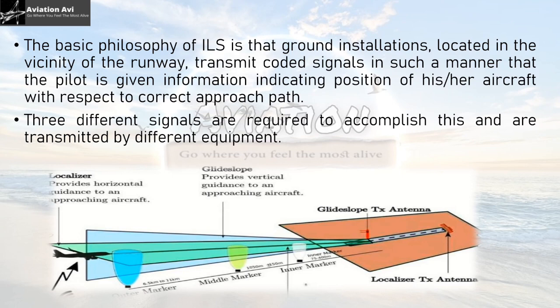As shown in this figure, the basic philosophy of ILS is that ground installations located in the vicinity of the runway transmit coded signals in such a manner that the pilot is given information indicating the position of his or her aircraft with respect to the correct approach path. Three different signals are required to accomplish this, transmitted by three different equipments.